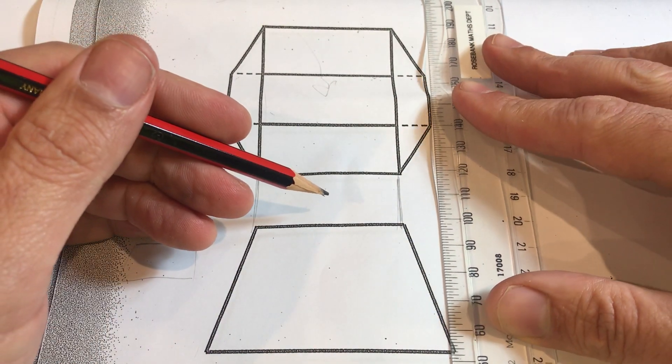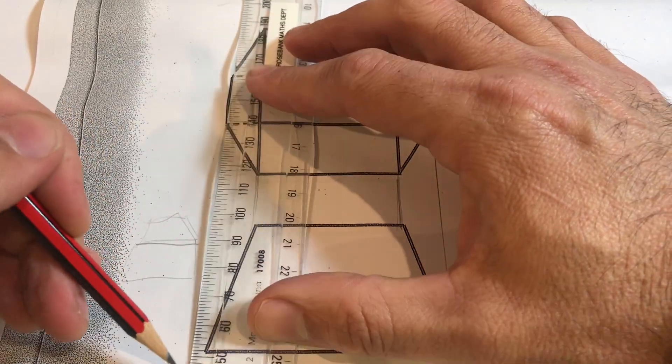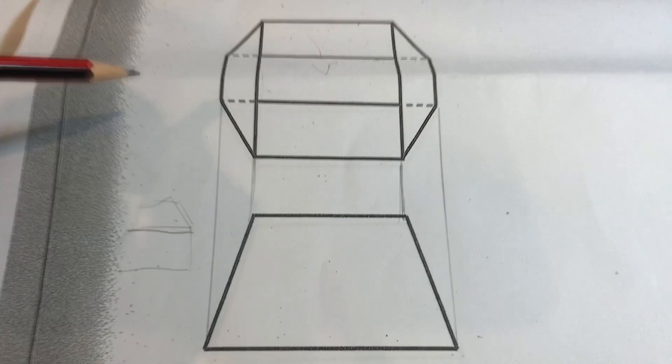If you drop a line down from this side here vertically you can see that all of these lines line up nicely. So that's how they do that projection.